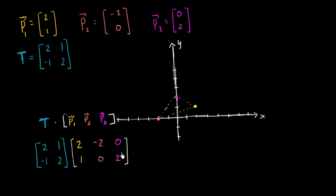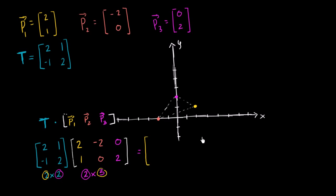One way to think about it: we're taking our transformation matrix and multiplying it by a matrix where the first column is position vector one, the second column is position vector two, and the third column is position vector three. This is a two by two matrix multiplied by a two by three matrix, so matrix multiplication is defined because the number of columns equals the number of rows, and it results in a two by three matrix — two rows and three columns — which represents three new position vectors.